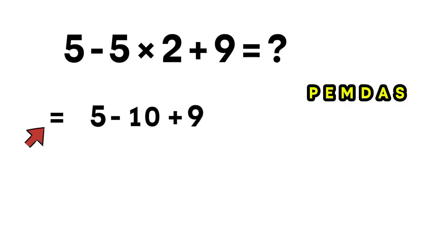At this point, we only have subtraction and addition left. And since those operations share the same priority, we solve them from left to right. So we start with 5 minus 10, which equals negative 5.